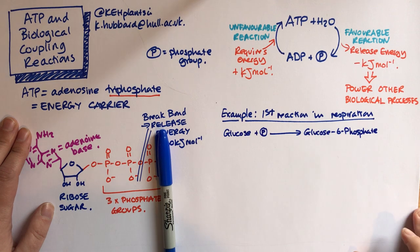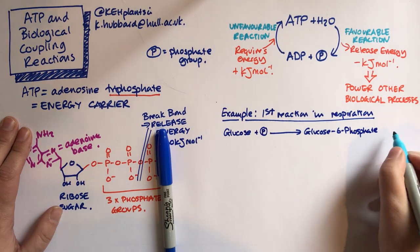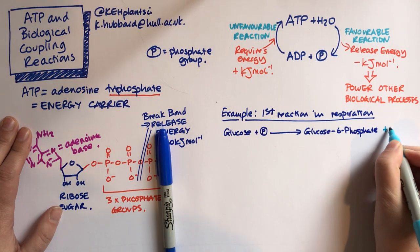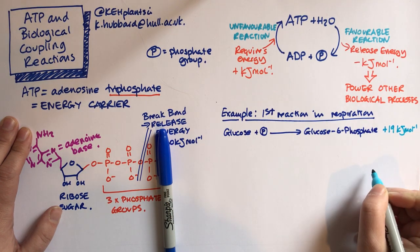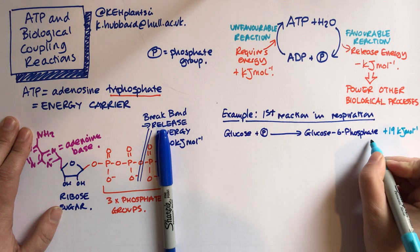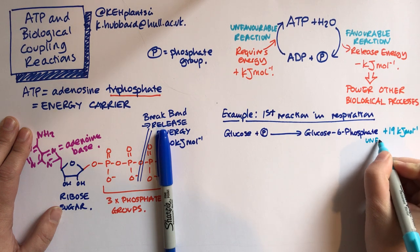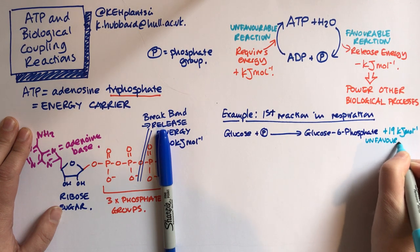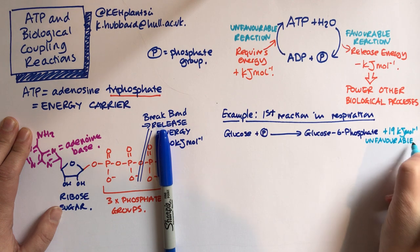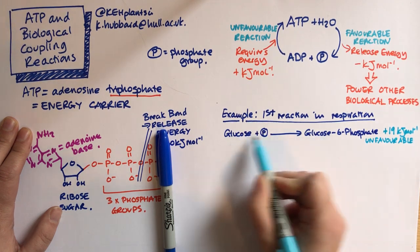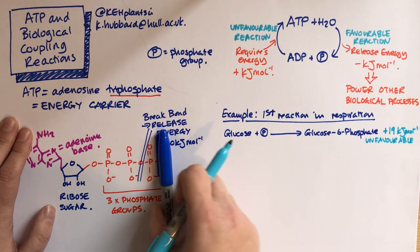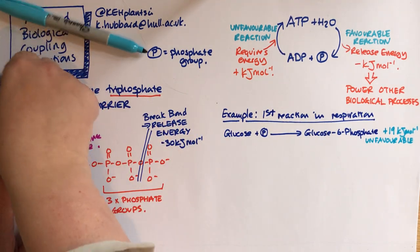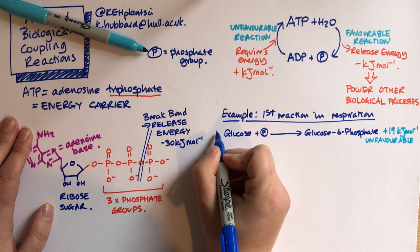But unfortunately, that is an unfavourable reaction. It requires 19 kilojoules per mole of energy. So that is unfavourable. That means that that reaction biologically won't happen - it doesn't want to happen, it's not favourable for the cell to do it. So that's our first reaction.